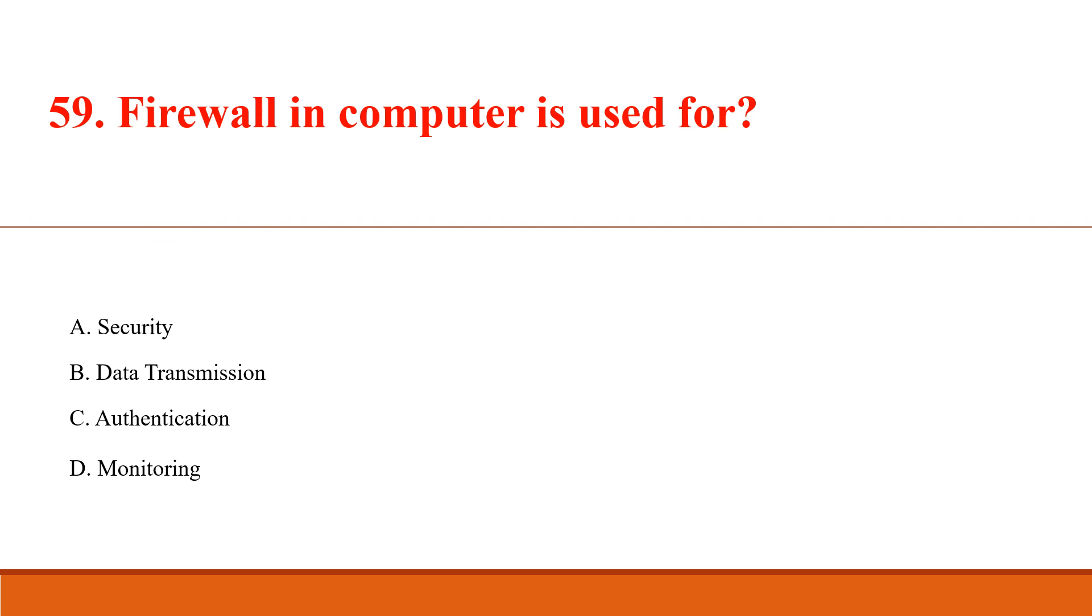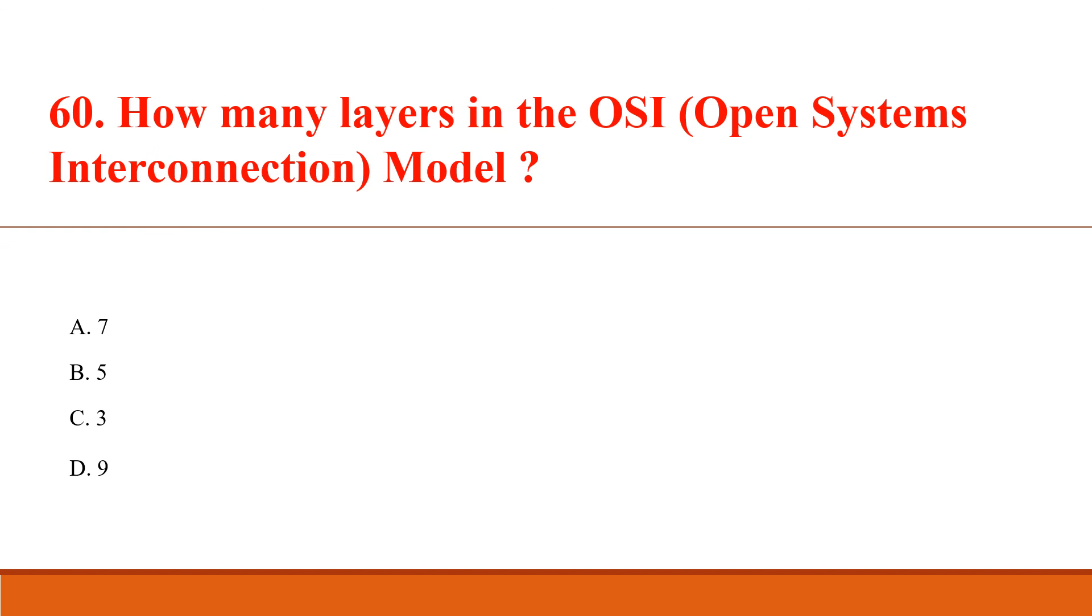Firewall in computer is used for? Answer Option A: Security. How many layers in the OSI model? Answer A: 7.